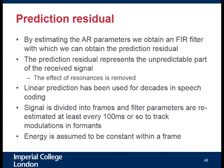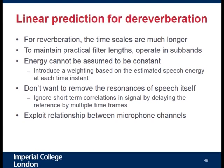In a room, reflections arriving later are related to the original signal, so there are predictable qualities. We use linear prediction to remove the predictable part — which is the reverberation — and keep only the unpredictable part, which is the speech. The difference between linear prediction for speech and for reverberation is that the time scales are massively different. For speech we take frames of around 30 milliseconds where the signal is stationary; for a room the reverberation time can be up to a second or more, but the speech input is changing a lot, so we need to introduce weighting terms to the problem.